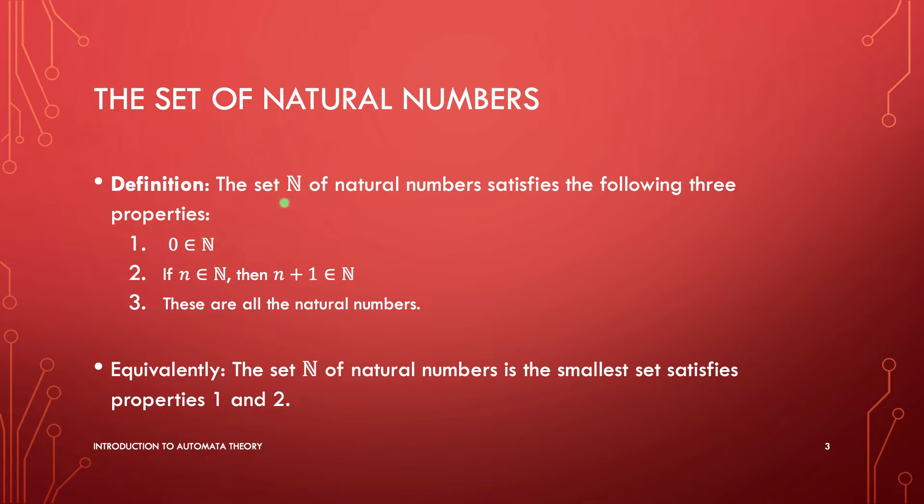The set N of natural numbers satisfies the following three properties. First, 0 is in N. Second, if n is in N, then n plus 1 is in N. Third, these are all the natural numbers. There is no other recipe for introducing natural numbers except through rules one and two.